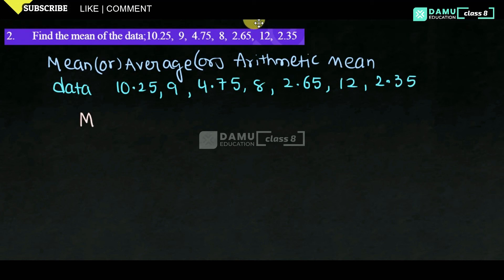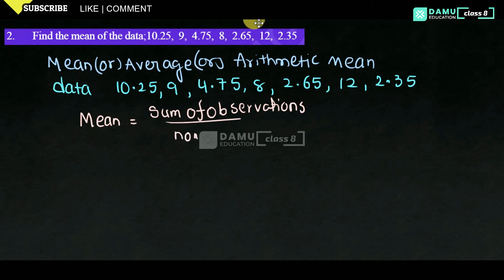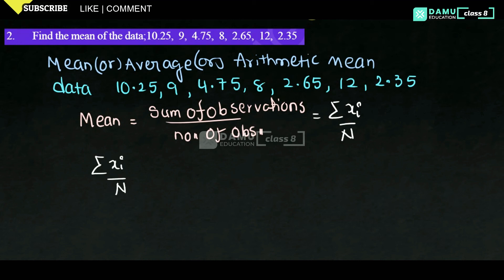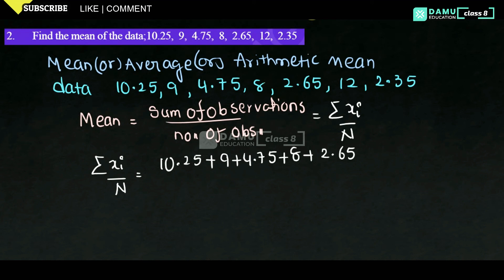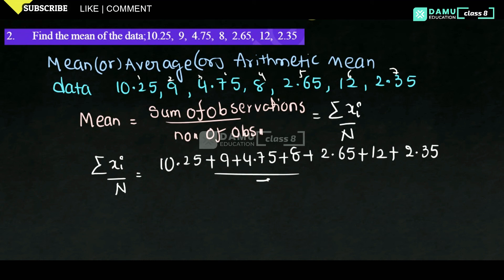Mean equals sum of observations divided by number of observations. The formula is: mean equals summation of xi by n. So here we calculate: 10.25 plus 9 plus 4.75 plus 8 plus 2.65 plus 12 plus 2.35, all divided by the number of observations. Counting: 1, 2, 3, 4, 5, 6, 7 — so 7 observations are given.